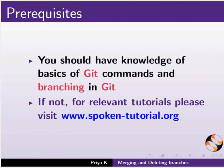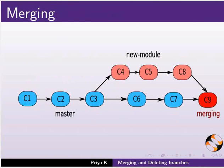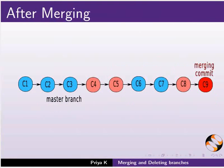Earlier in the series, we learned to create branches. Now, we will learn how to merge two branches. This diagram illustrates how the new module branch is merged with the master branch. This is done in the C9 commit. After merging, the commits of new module are added to master branch. Let me explain how it works.